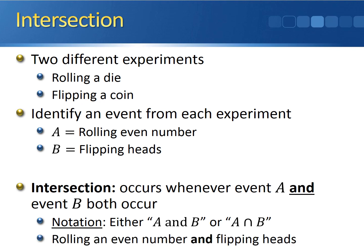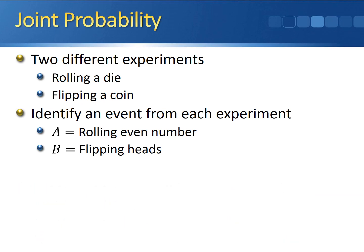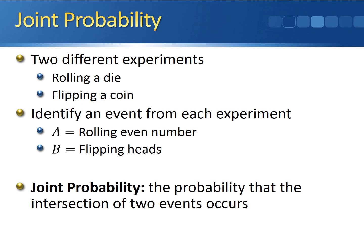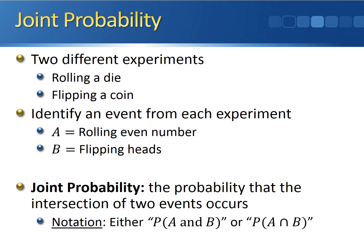In this case, the intersection of our events would be the event that occurs whenever we roll an even number and flip heads. The joint probability is the probability that the intersection of two events occurs. The notation for the joint probability is just the notation for the intersection placed inside the probability symbol — so the probability of A and B, or P(A ∩ B).